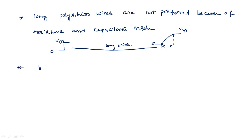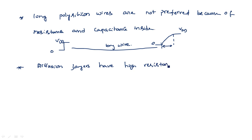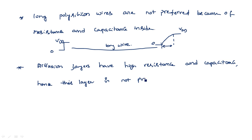Coming to the diffusion layers — P-plus diffusion and N-plus diffusion are very much limited because of their highest capacitance and highest resistance. Diffusion layers have high resistance and high capacitance.